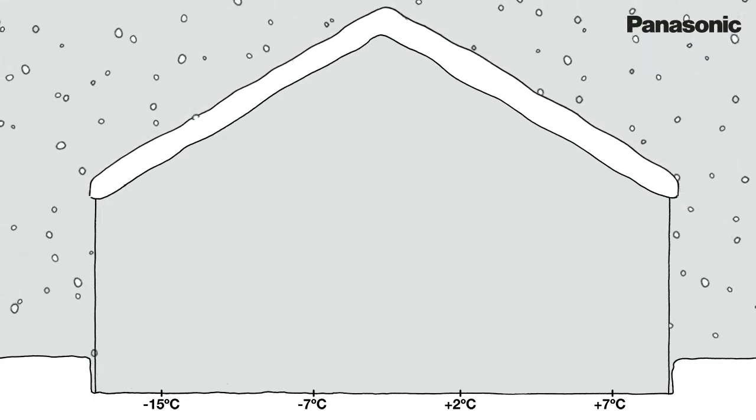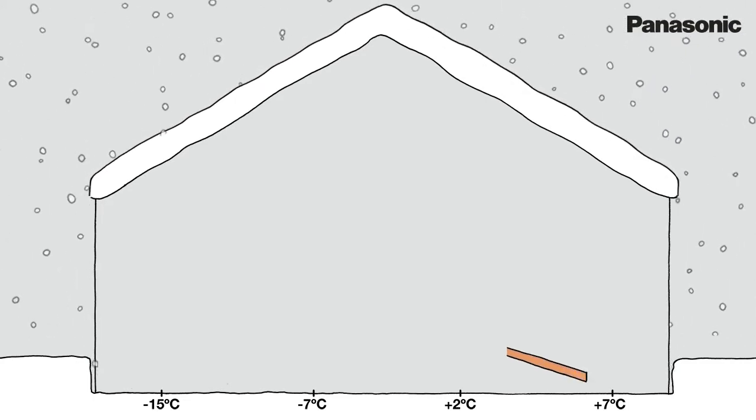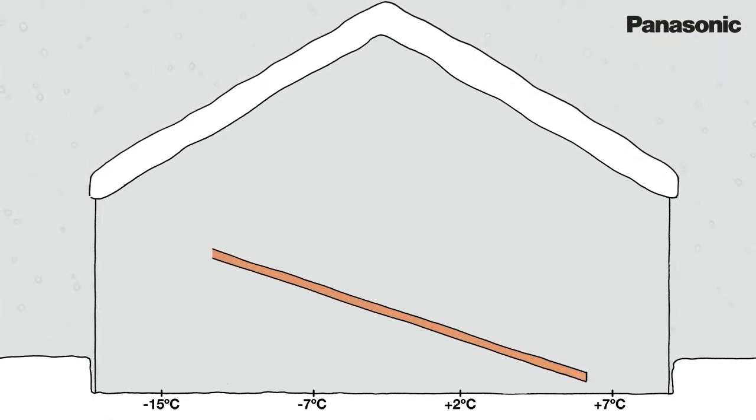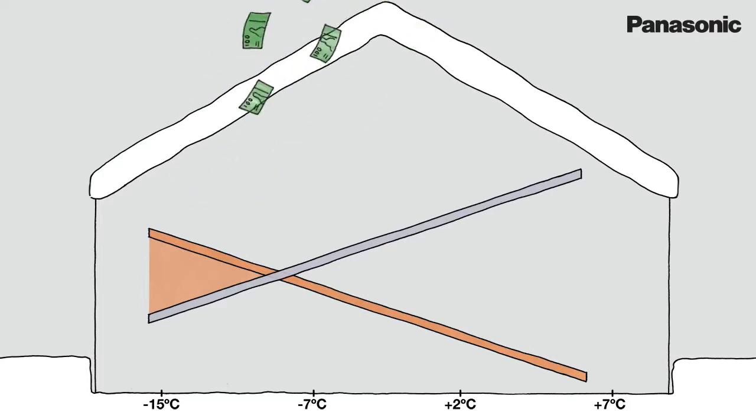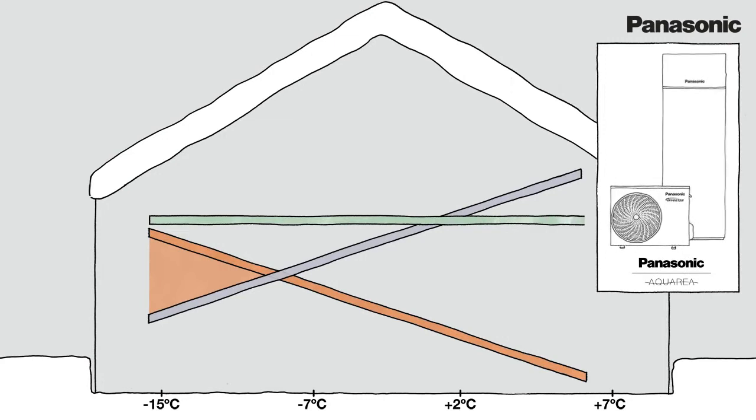When the outdoor temperature is decreasing, the house needs more energy to heat. A standard heat pump is not always capable to cover the full needs of the house, as its capacity is dropping with the outdoor temperature. The standard heat pumps need to use the electrical backup heater to heat the house. This is not cost efficient. Panasonic unique heat pumps keep the full capacity and energy cost, even at very low temperatures.